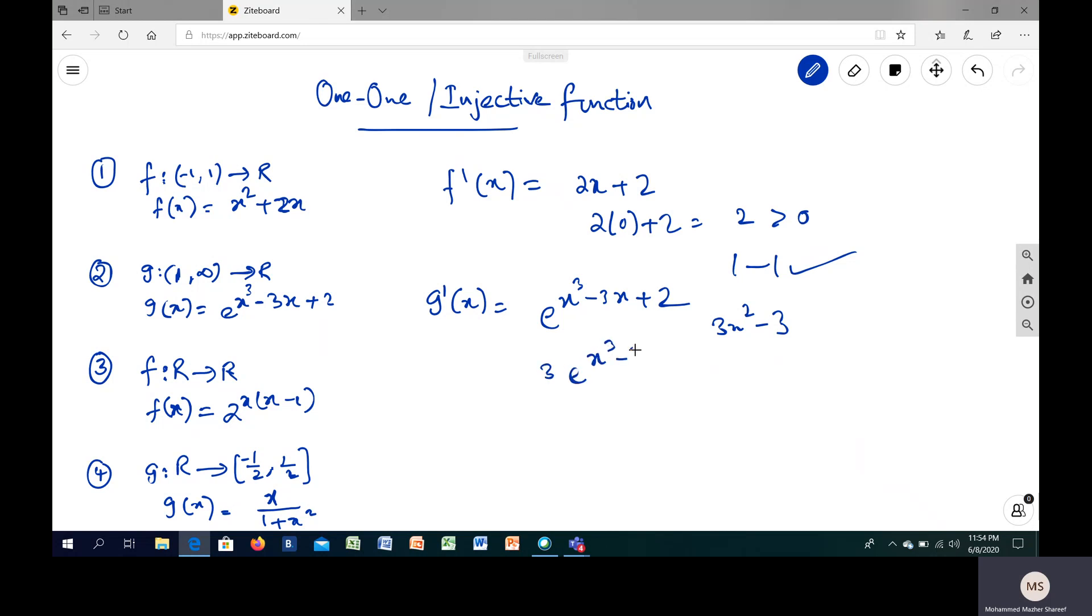Upon taking 3 common, I will get e^(x³ - 3x + 2) times (x² - 1). Since your domain is the set of positive numbers, whatever value you keep here, it is definitely going to be greater than 0, positive. In this case also you can say your function is one-to-one. Isn't it very simple students? I hope you got it now.